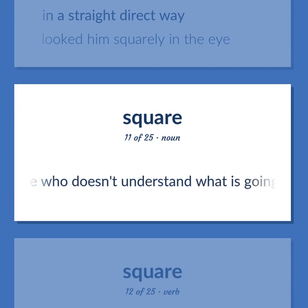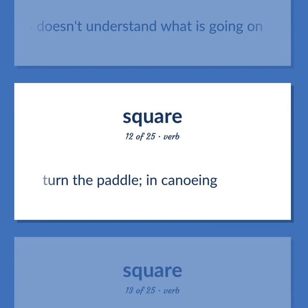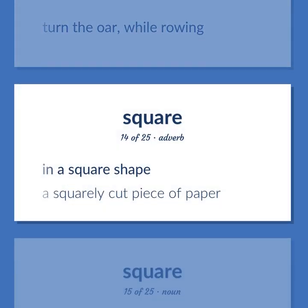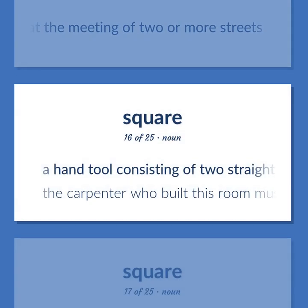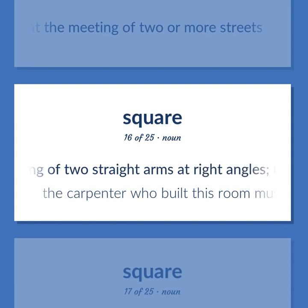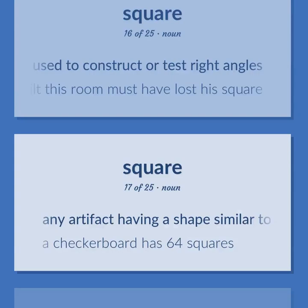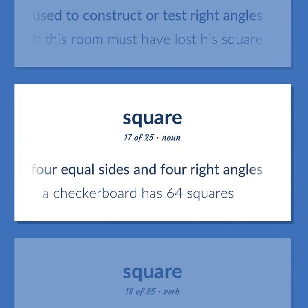Square: someone who doesn't understand what is going on. Turn the paddle in canoeing; turn the oar while rowing. In a square shape — a squarely cut piece of paper. An open area at the meeting of two or more streets. A hand tool consisting of two straight arms at right angles, used to construct or test right angles — the carpenter who built this room must have lost his square. Any artifact having a shape similar to a plain geometric figure with four equal sides and four right angles — a checkerboard has 64 squares.